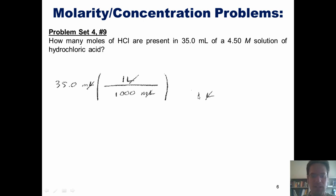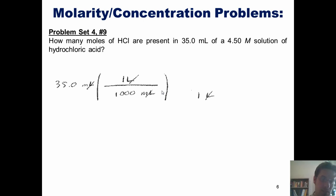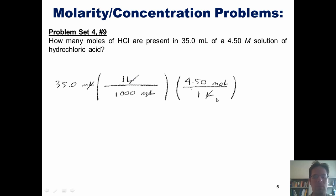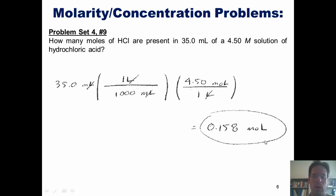So I'm going to want liters in the denominator of my next set of parentheses to cancel out those liters on top. Keeping in mind that molarity — this capital M — is the same thing as moles per liter, I can put moles in the numerator. For this particular solution, are there indeed 4.50 moles in one liter? Absolutely. All units have now cancelled, leaving me with final units of moles of HCl, which is indeed what I want. I plug and chug with my calculator and get the answer of 0.158 moles.